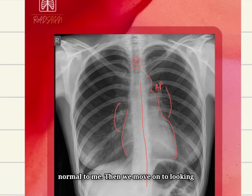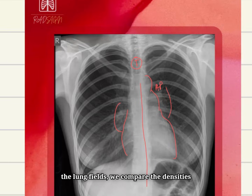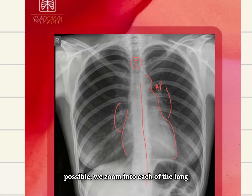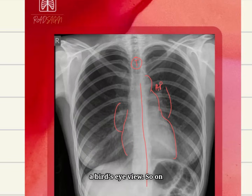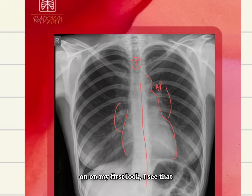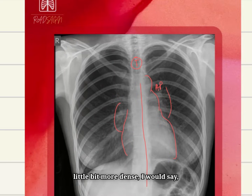We move on to looking at the lung fields. When we look at the lung fields, we compare the densities of bilateral lung fields. If possible, we zoom into each of the lung fields; if not, we give it a bird's eye view. On my first look, I see that the right lower zone is a little bit more dense compared to the left side.